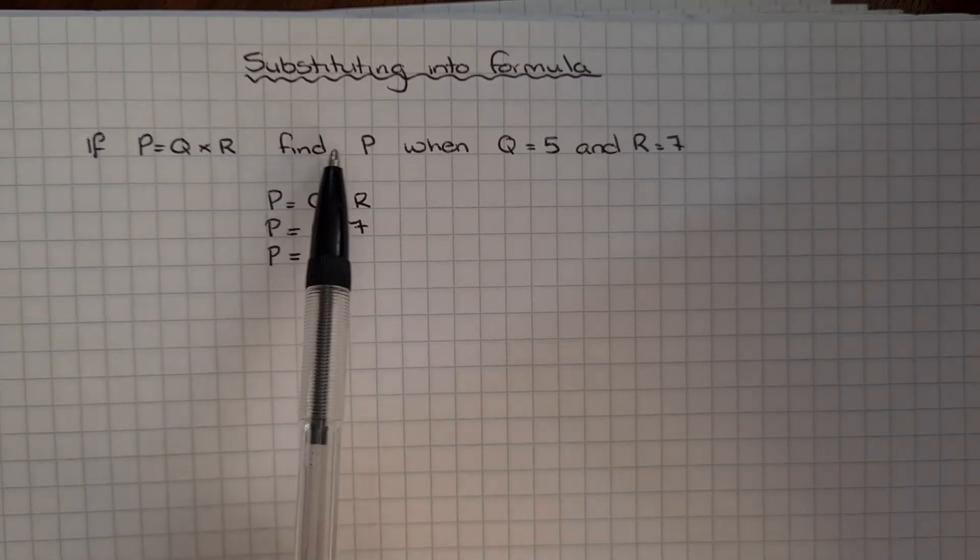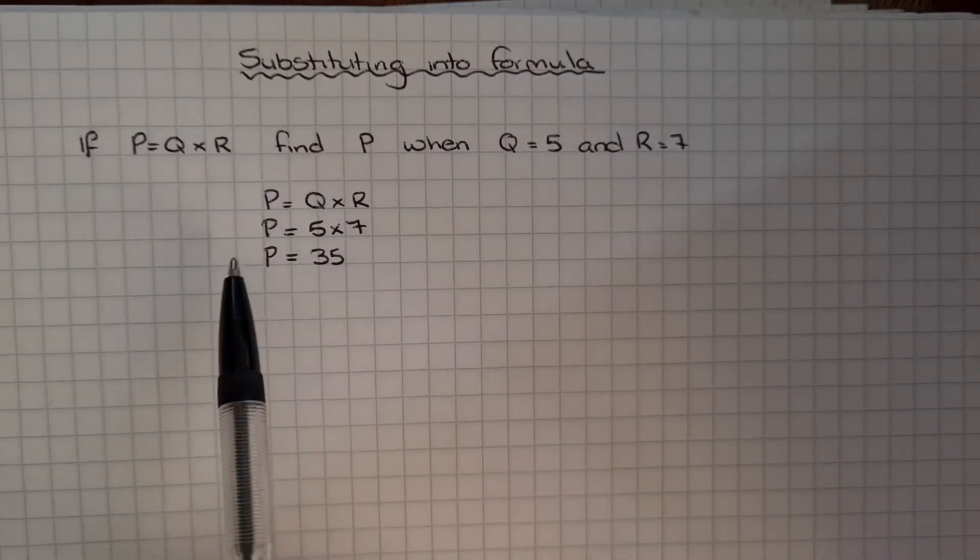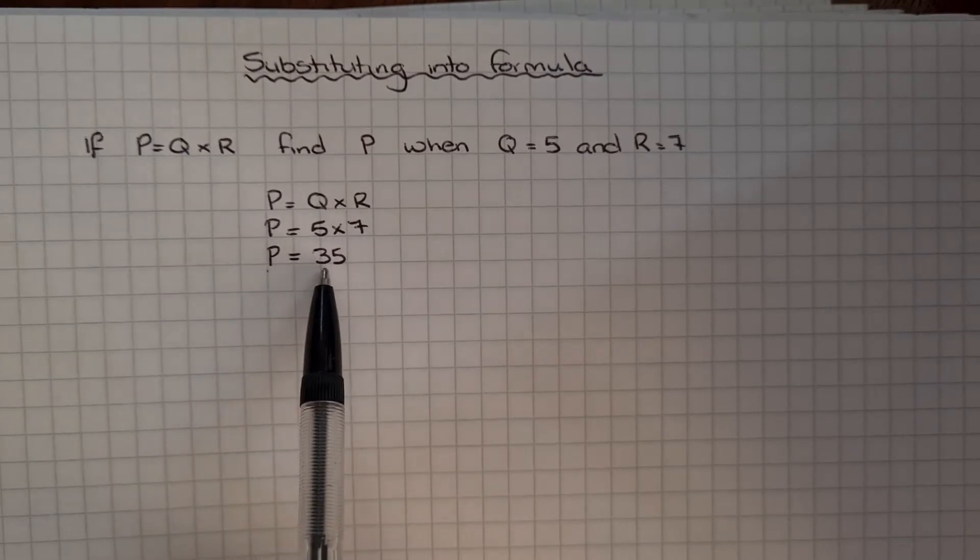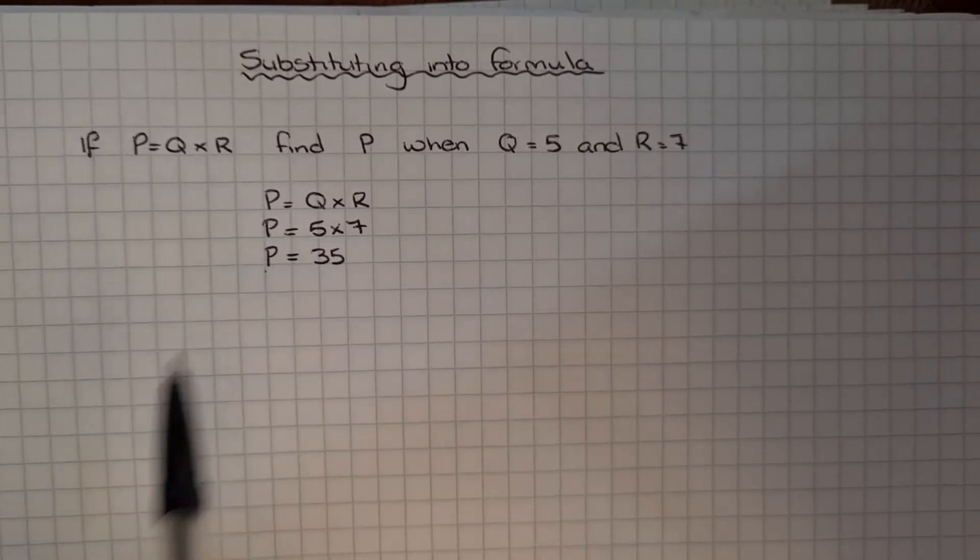They asked us to find P when Q equals 5 and R equals 7, so P is 35. And that's the answer.